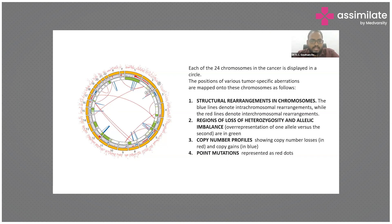Point mutations are represented as red dots on the Circos plot. Copy number gains indicate more copies of chromosomal material. Copy number losses — such as loss of tumor suppressor genes — cause significant damage and are also represented on the plot. These elements together complete the genetic information represented in a Circos plot.